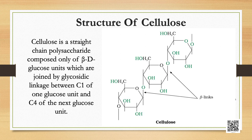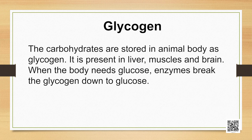Cellulose occurs exclusively in plants; it is a predominant constituent of cell walls of plant cells. Cellulose is a straight chain polysaccharide composed only of beta-D-glucose units, which are joined by glycosidic linkage between C1 of one glucose unit and C4 of the next glucose unit. Glycogen: carbohydrates are stored in the animal body as glycogen. It is present in liver, muscles, and brain. When the body needs glucose, enzymes break glycogen down to glucose.